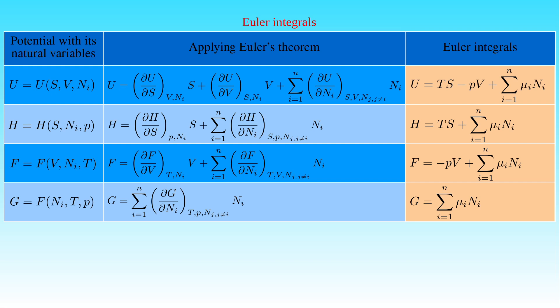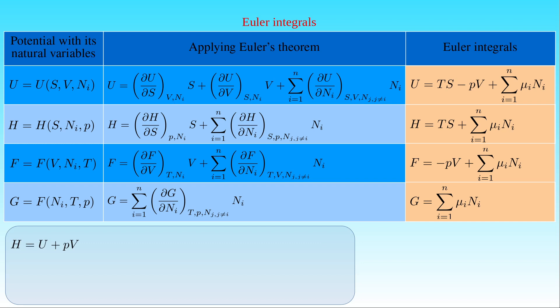Although the last three equations are consequences of Euler's theorem, they immediately follow from the Euler equation. Since the enthalpy H is defined by the sum of the internal energy U and the product of P and V, substituting the Euler equation gives H as T times S minus P times V plus the sum of μᵢ times Nᵢ, plus P times V, which yields the equation for enthalpy.